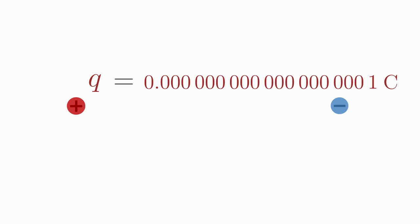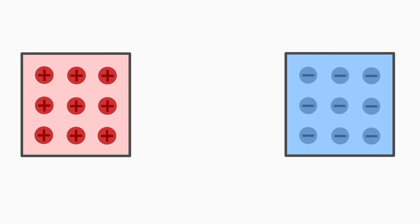Only if we take a lot of particles, they will carry a noticeable amount of charge. So let's take a lot of charges. In order that different particles don't get mixed up, we put the positive particles in one box and the negative particles into another box.